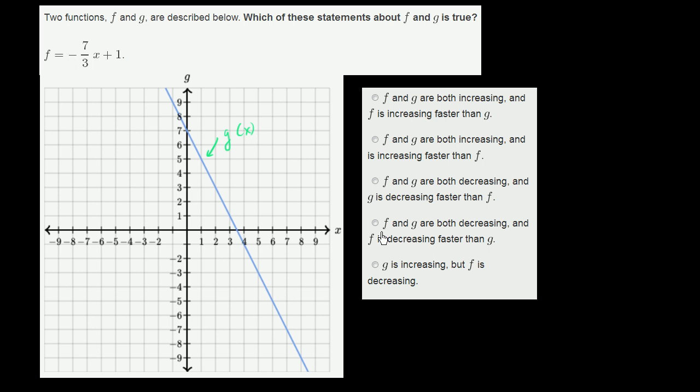So let's look at our choices and see which of these are true. f and g are both increasing, and f is increasing faster than g. Well, first of all, g is definitely decreasing. So we already know that that's false.